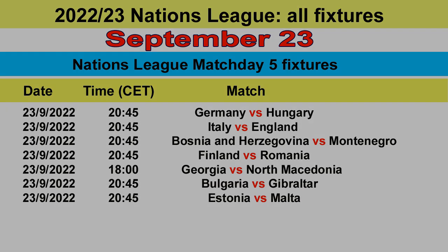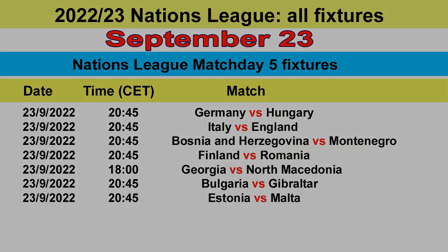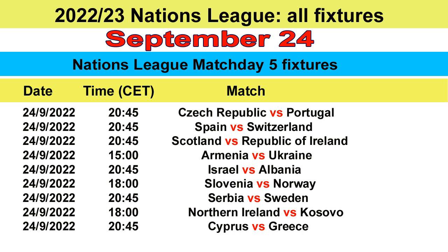23rd September, Germany vs. Hungary. 23rd September, Italy vs. England. 23rd September, Bosnia vs. Montenegro. 23rd September, Finland vs. Romania. 23rd September, Georgia vs. North Macedonia. 23rd September, Bulgaria vs. Gibraltar. 23rd September, Estonia vs. Malta. 24th September, Czech Republic vs. Portugal. 24th September, Spain vs. Switzerland. 24th September, Scotland vs. Republic of Ireland. 24th September, Armenia vs. Ukraine.